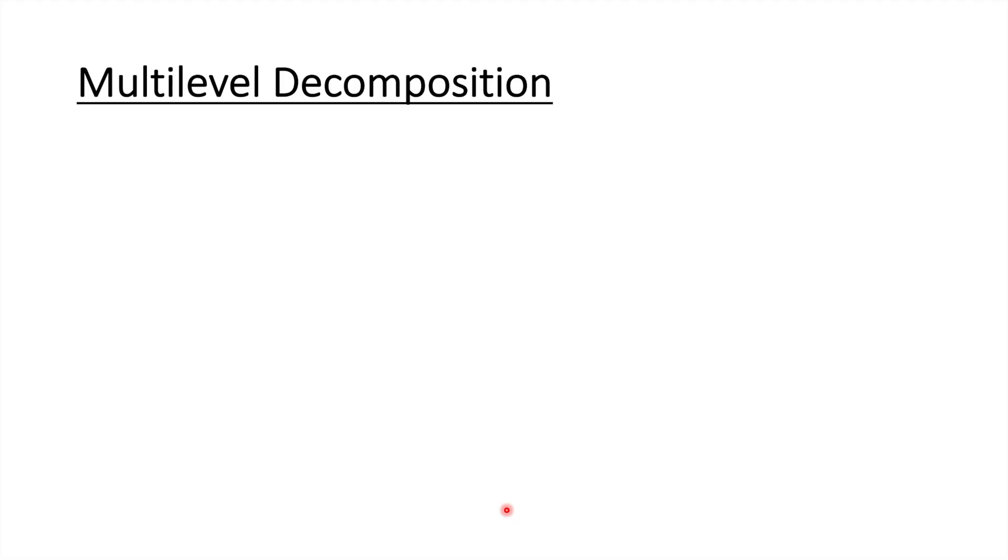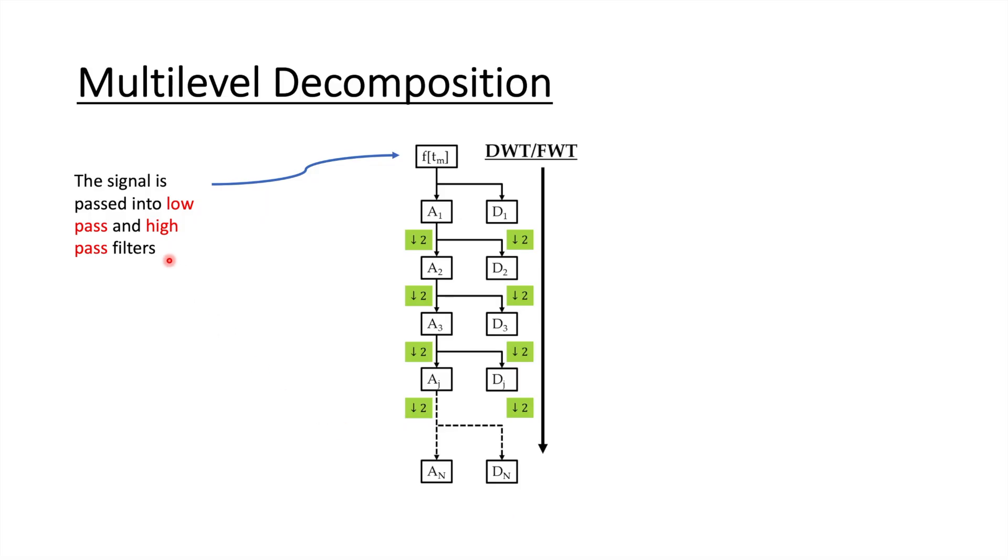So computationally, how is the discrete wavelet transform computed? Well, this is computed by multi-level decomposition. In this, our signal is passed into low-pass and high-pass filters. Low-pass filters will pass our low-frequency components of the signal, but they're going to reject our high-frequency components. So A represents our approximation coefficients. D represents our detail coefficients. So the low-pass portions, approximation coefficients, are iteratively filtered by the same process each time. So they keep going through the low-pass filters to disregard the high-frequency components at each level.